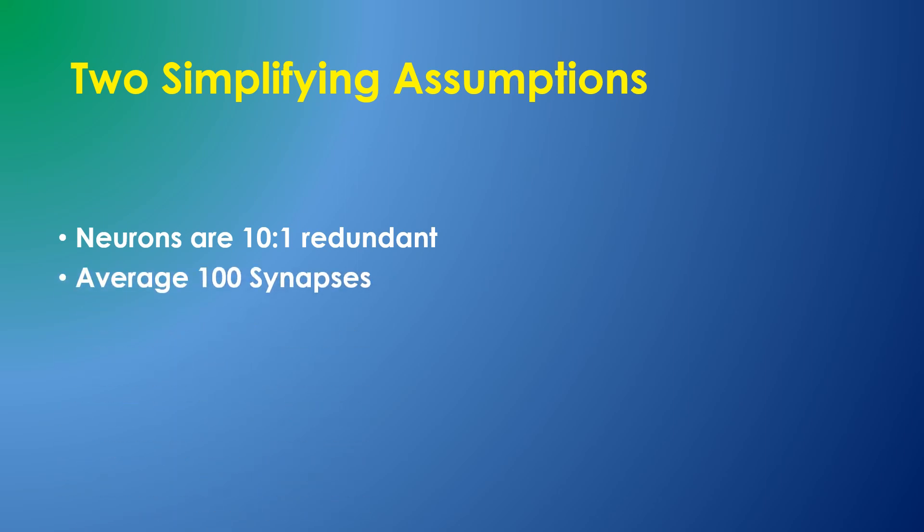Likewise, we'll assume that neurons average 100 synapses, although your brain might have 10,000. Again, we can be sure that synapses are also redundant, and again, we just don't know by how much.